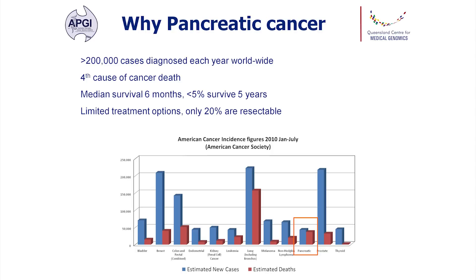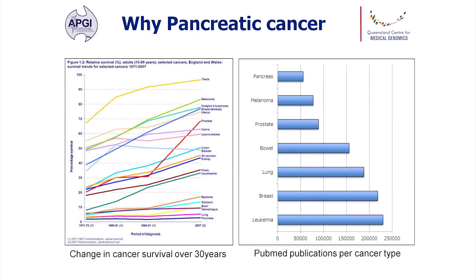What's important to realise is why we actually study pancreatic cancer. It's often not recognised as being the strikingly devastating disease that it is. It's actually the fourth leading cause of cancer-related death, with a median survival of only six months and less than 5% surviving after five years. There are limited treatment options, with only 20% of patients presenting with resectable disease and only a single chemotherapy agent available as first-line therapy.